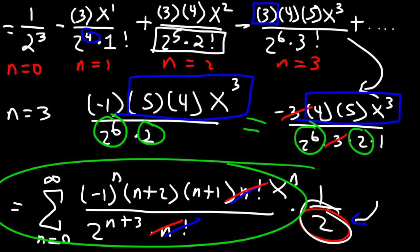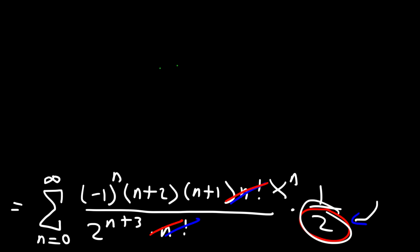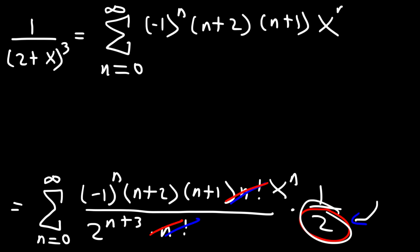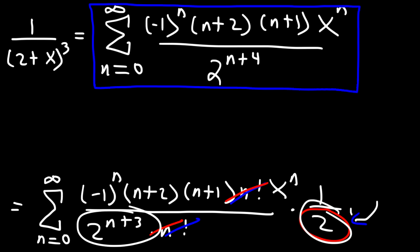We now have the appropriate series. Let's write the final answer: 1 divided by (2+x)³ equals the sum from 0 to infinity of negative 1 to the n, times (n+2)(n+1) times x to the n, divided by 2 to the (n+3) times 2 to the 1, which combines to 2 to the n+4. That's our final answer.